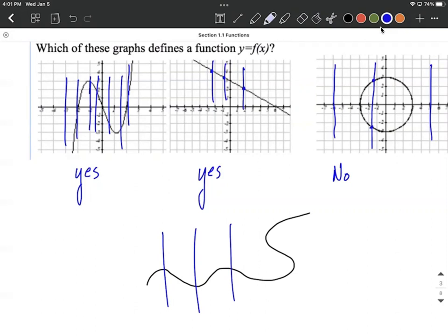then that means it's going to fail the vertical line test and that's not going to be a function.